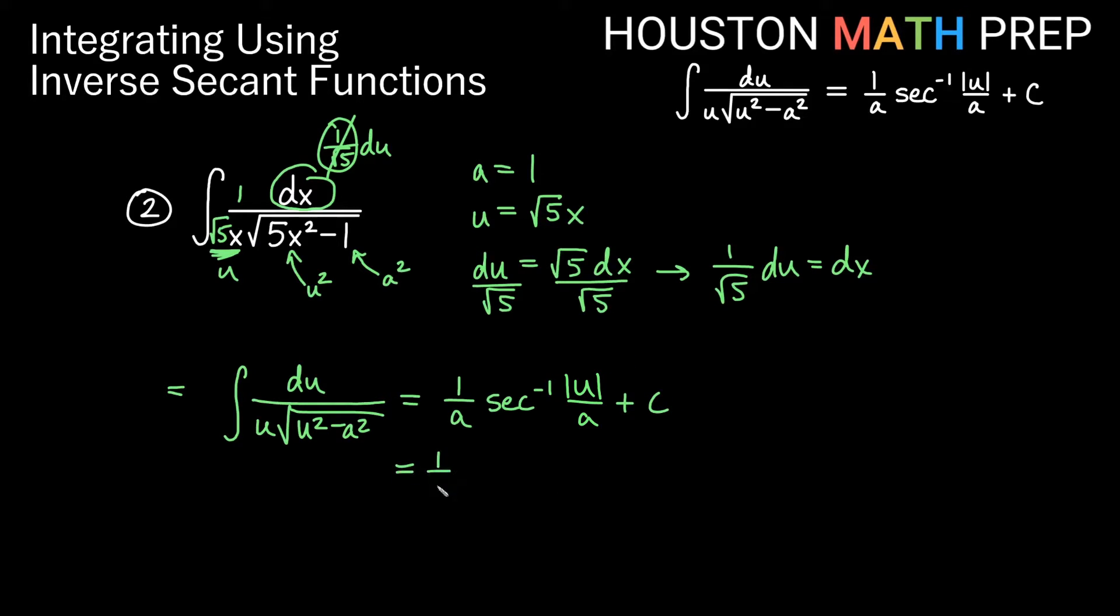And now let's go ahead and plug in our u and our a. If I just throw everything in there unsimplified, we get 1 over 1 inverse secant of u over a would become root 5x over 1 plus c. Now we don't need any of these over 1s. We don't actually need this entire 1 over 1 here. So let's just go ahead and say the inverse secant of really just root 5 times x plus our constant here.